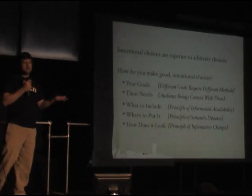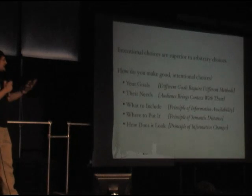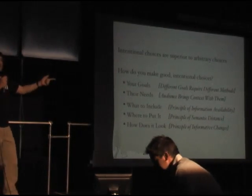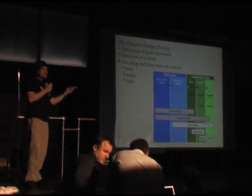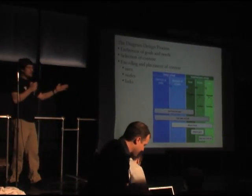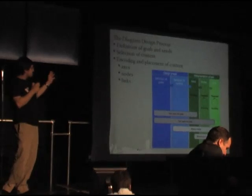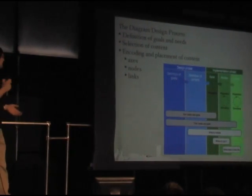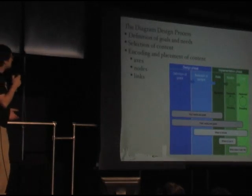And the way to do that is you have to make good choices as you're designing things. Five key points. What are your goals? What are the needs of your audience? What to include in the diagram? Where to put it? And how to encode it? These flow into a nice little process, which I'm not going to go into. But basically, all of these things will inform you step by step as you're creating this masterpiece that you're going to create.